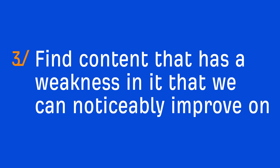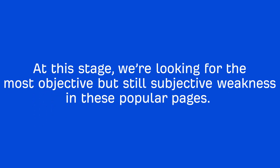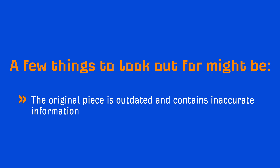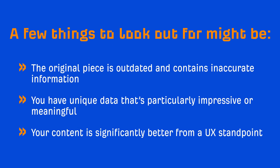The final thing we need to do is find content that has a weakness in it that we can noticeably improve on. The concept of better is kind of subjective, and your outreach emails need to communicate why they should link to you instead of, or in addition to, the page they're currently linking to. So at this stage we're looking for the most objective but still subjective weakness in these popular pages. A few things to look out for might be: the original piece is outdated and contains inaccurate information, you have unique data that's particularly impressive or meaningful, or your content is significantly better from a UX standpoint.